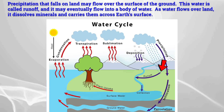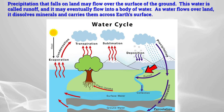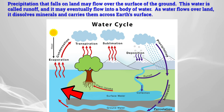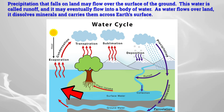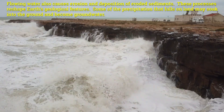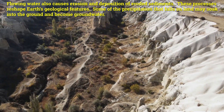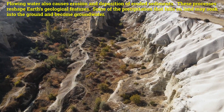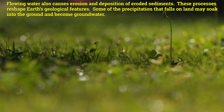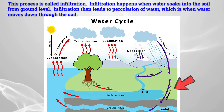Precipitation that falls on land may flow over the surface of the ground. This water is called runoff, and it may eventually flow into a body of water. As water flows over land, it dissolves minerals and carries them across Earth's surface. Flowing water also causes erosion and deposition of eroded sediments. These processes reshape Earth's geological features. Some of the precipitation that falls on land may soak into the ground and become groundwater. This process is called infiltration.